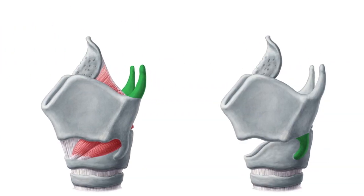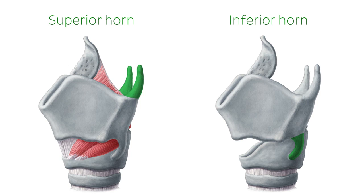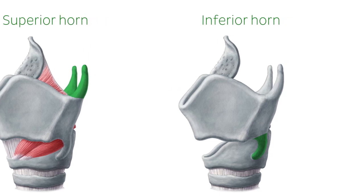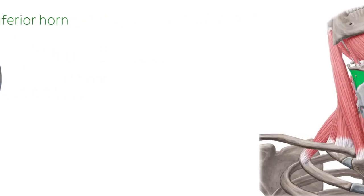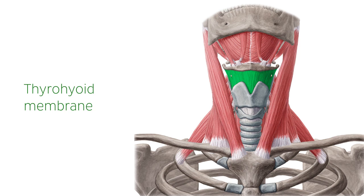The cartilaginous superior and inferior horns are created by the projections of the posterior, superior, and inferior borders of the cartilage, respectively. The thyrohyoid membrane connects the entire superior aspect of the cartilage to the hyoid bone.